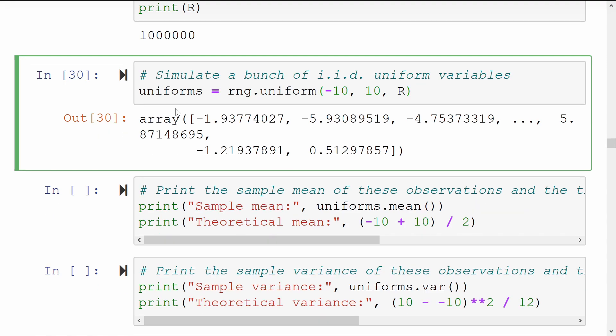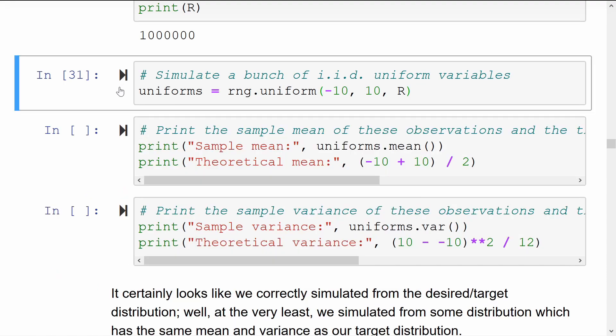And it only gave us this at all because I wrote uniforms by itself on this last line. So if I get rid of that, for example, and rerun this cell, it won't give any output. That's because when you set some output to a variable, that's not a statement that gets printed by default.